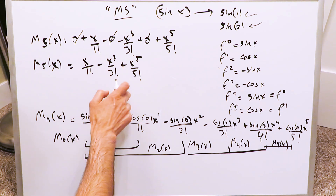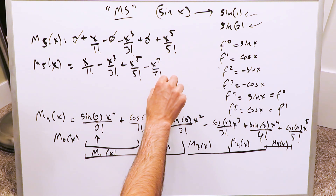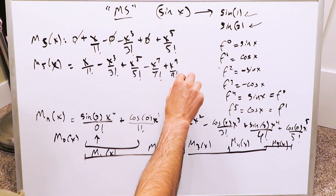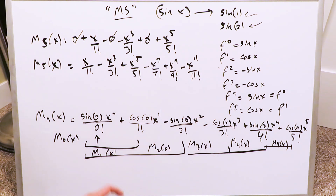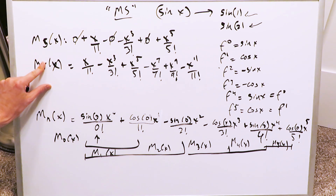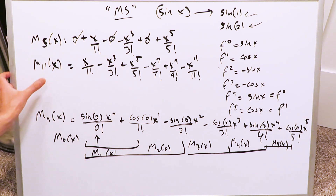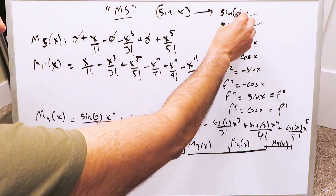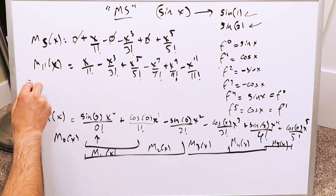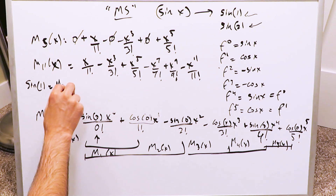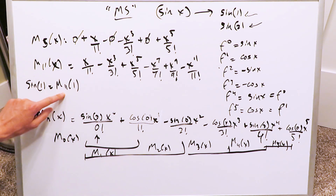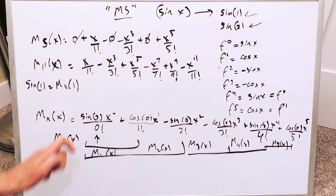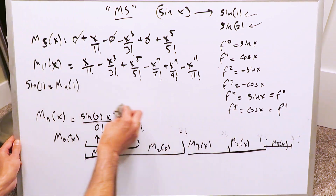The M5 polynomial cleans down to: x over 1 factorial minus x cubed over 3 factorial plus x to the 5 over 5 factorial. You can extrapolate further terms — it alternates in sign and every exponent is an odd number. So next comes minus x to the 7 over 7 factorial, then x to the 9 over 9 factorial, then minus x to the 11 over 11 factorial. This brings us to the M11 Maclaurin polynomial — going up to n equals 11. To find sine 1 or sine 2, you simply substitute those values in for x.